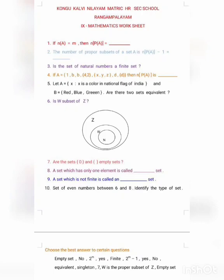Fourth one, if A equal to set of 1, b; B, set of 4, 2; set of x, y, z; D, set of d; then N of P of A is dash. Fifth one,